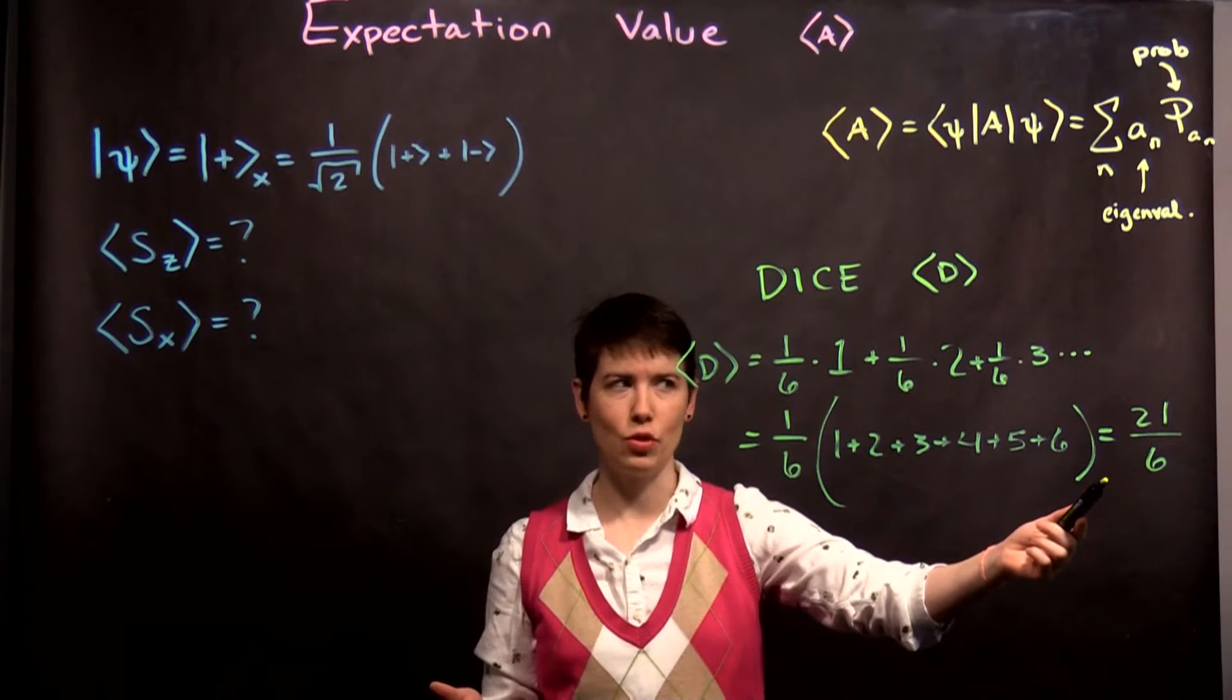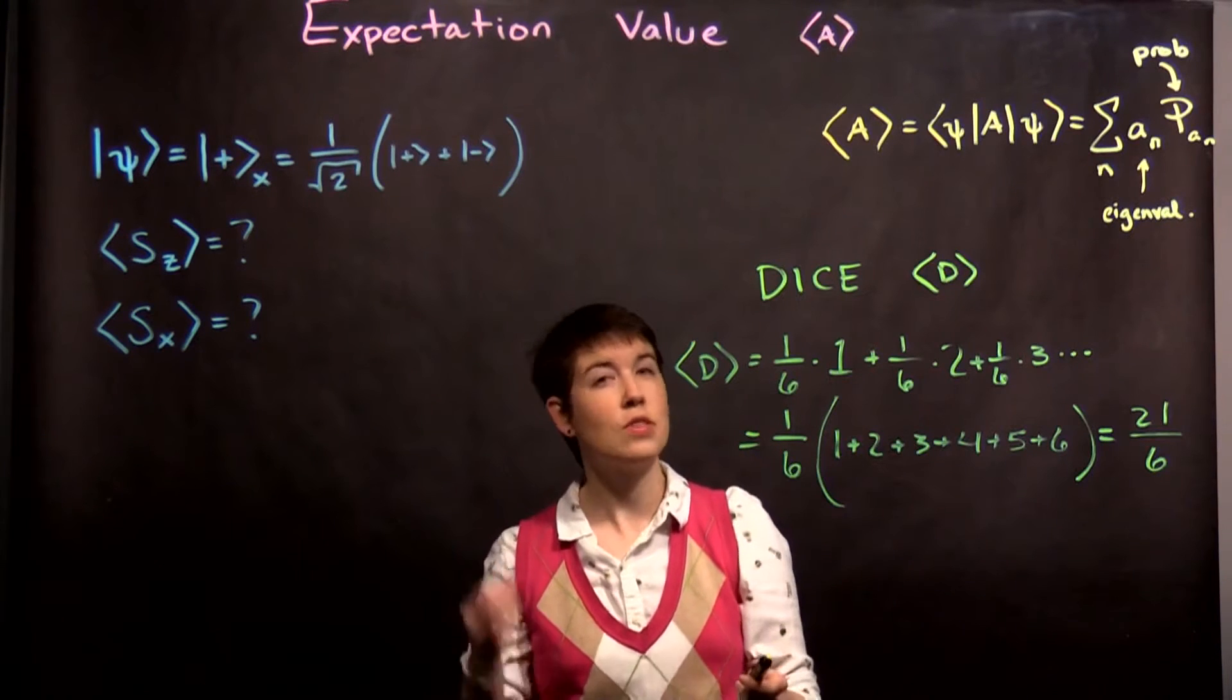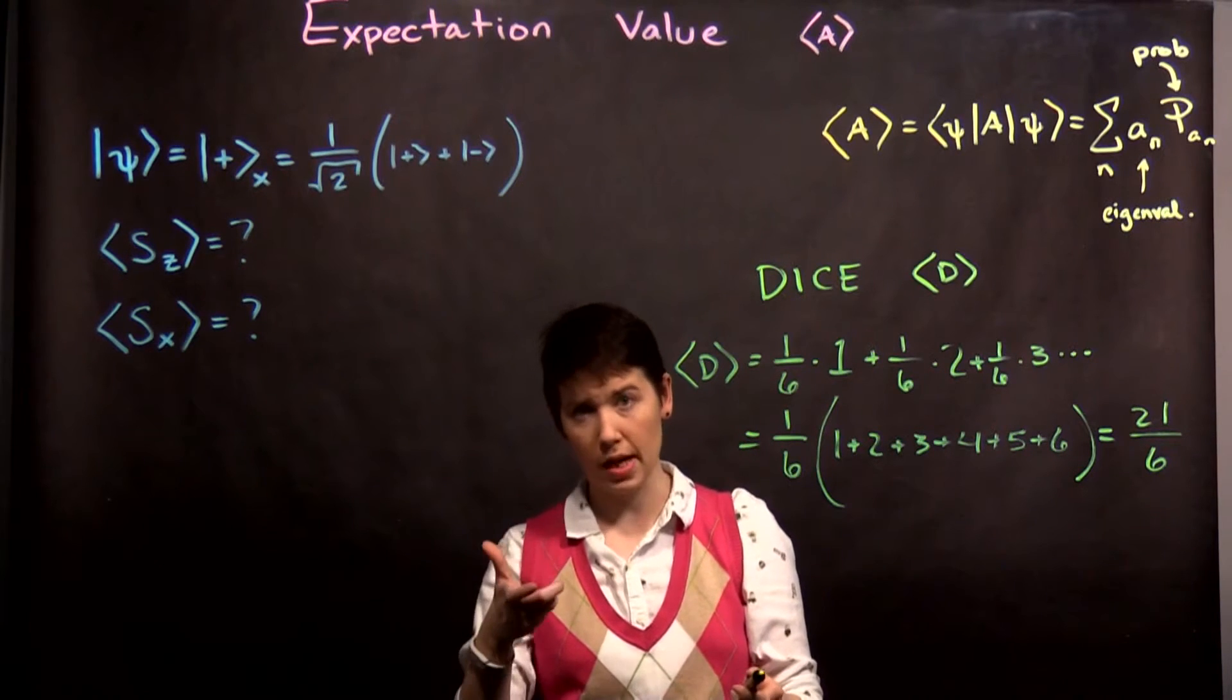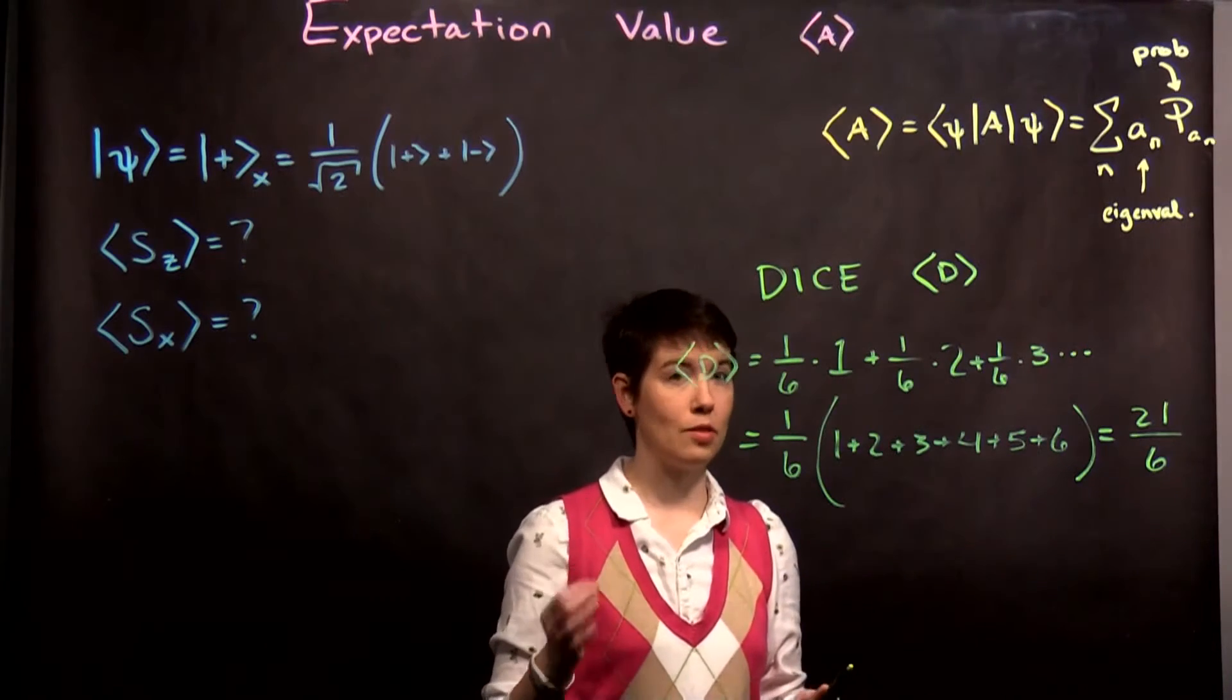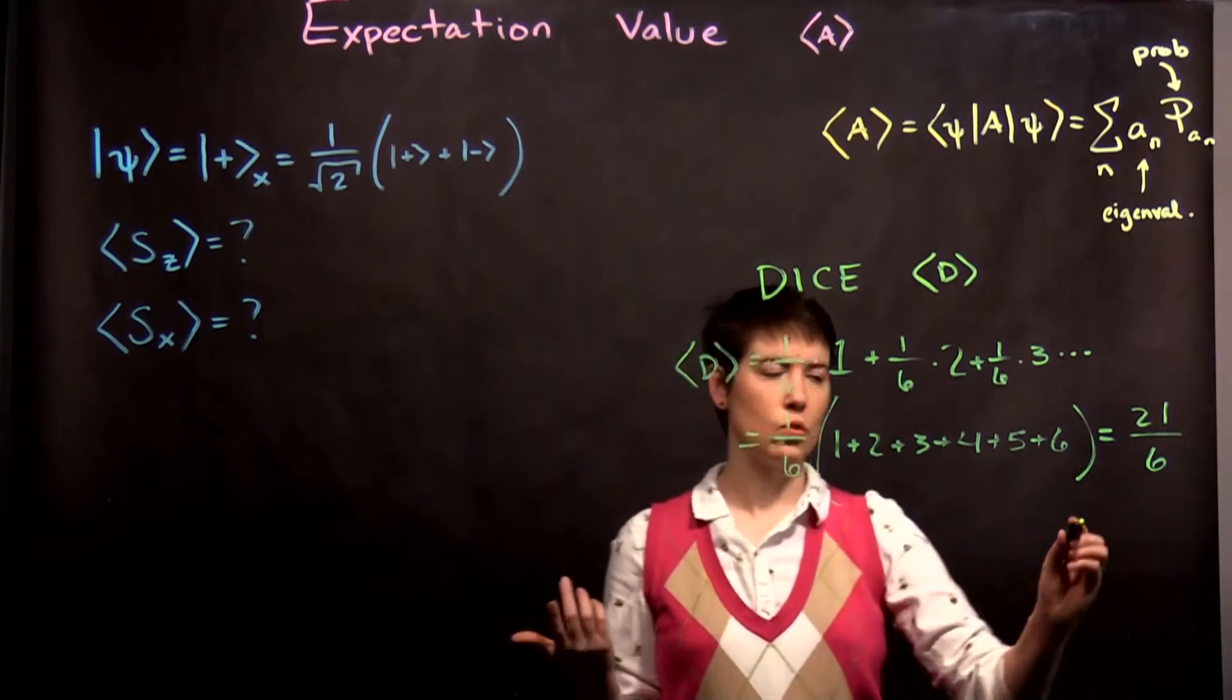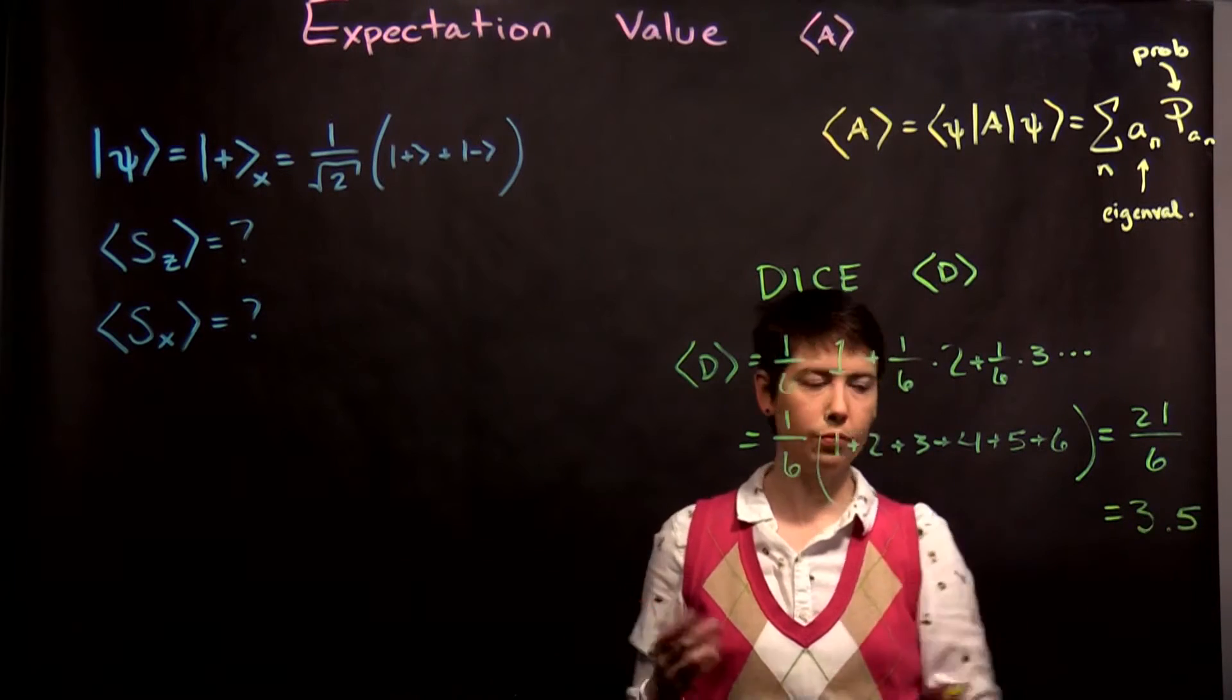21 divided by 6 is not actually an integer. And so what that tells you is that the expectation value, the average value you get from rolling a die a single time, is actually different than any of the individual possible measurements. What does this work out to be? 3.5.